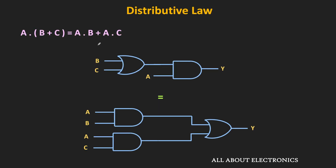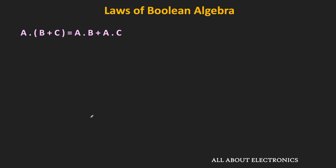Now let us move to the next law: the distributive law. As per this law, the AND operation of a and (b OR c) is the same as the OR operation of a·b and a·c. This law is very similar to normal algebra, where the variable outside the bracket is multiplied with each term in the bracket. Here, the variable outside the bracket gets ANDed with each term inside the bracket. This law is also true for more than one variable — for example, a·b·(c OR d) = a·b·c OR a·b·d.